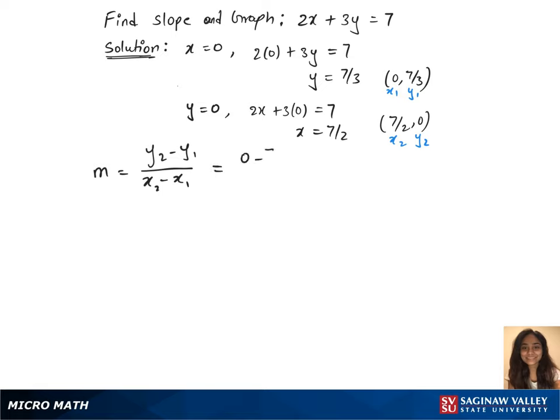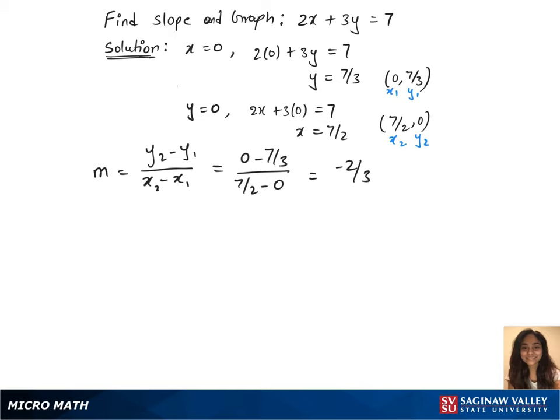Let's put those in the equation. 0 minus 7 over 3 over 7 over 2 minus 0, which gives us minus 2 over 3. That's our gradient.